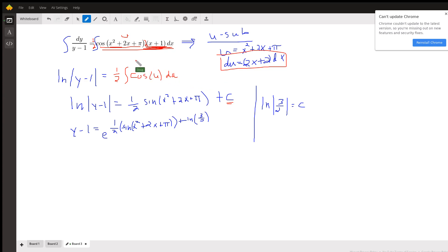And now we want to find out what c is. And if we put 0 in for x, we get the sine of pi, which is 0. One-half times 0 is 0. So on the right side, we just get a c. And if we put 5 halves in for y, we get ln of 3 halves.